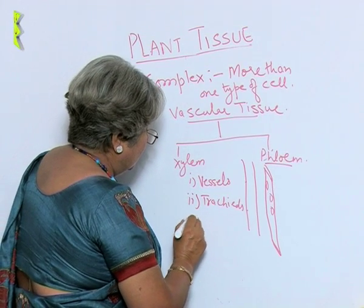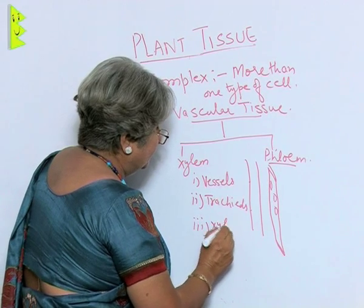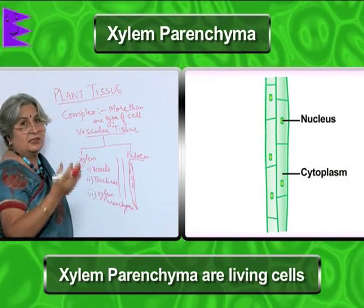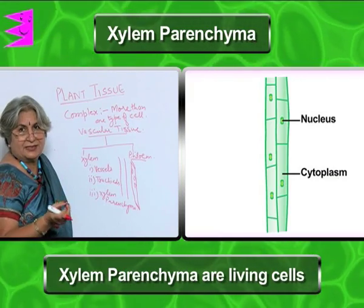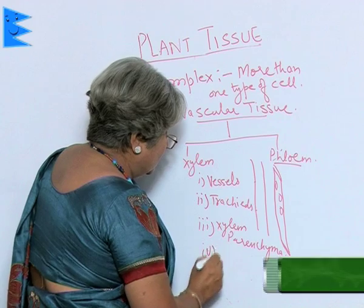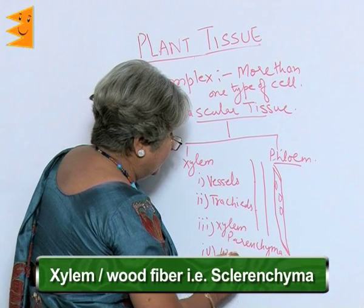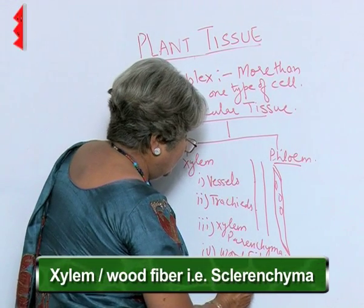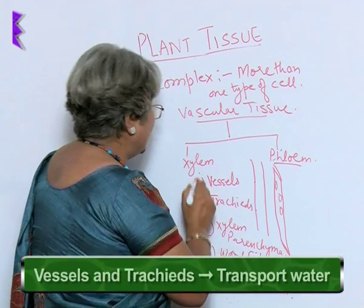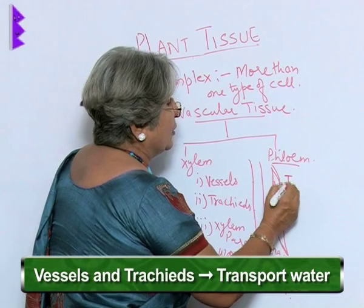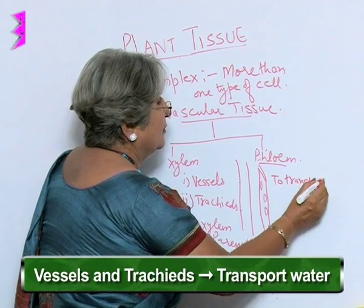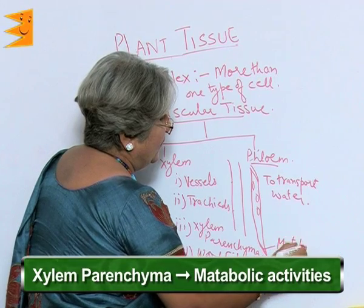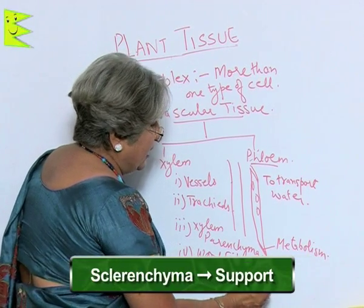Third is xylem parenchyma. These are living cells because some kind of energy has to be released, and for that we need living cells. Fourth is xylem fiber, or wood fiber, which is sclerenchyma. So vessels and tracheids transport water, xylem parenchyma is for metabolic activities, and sclerenchyma is for support.